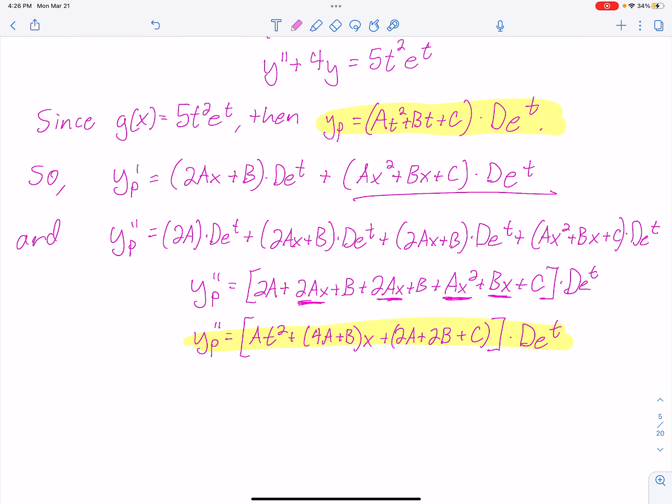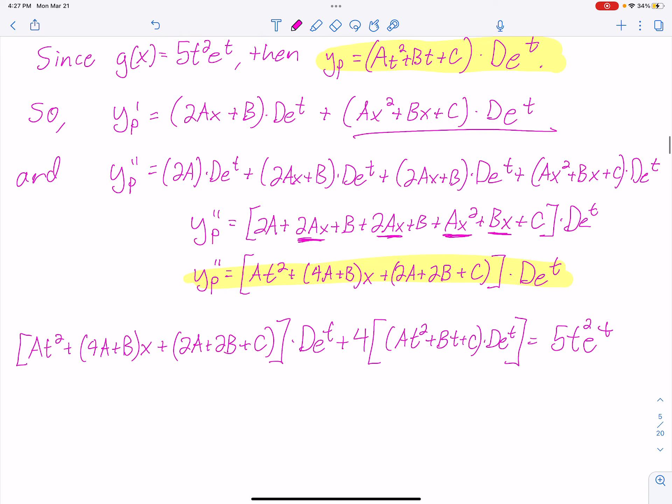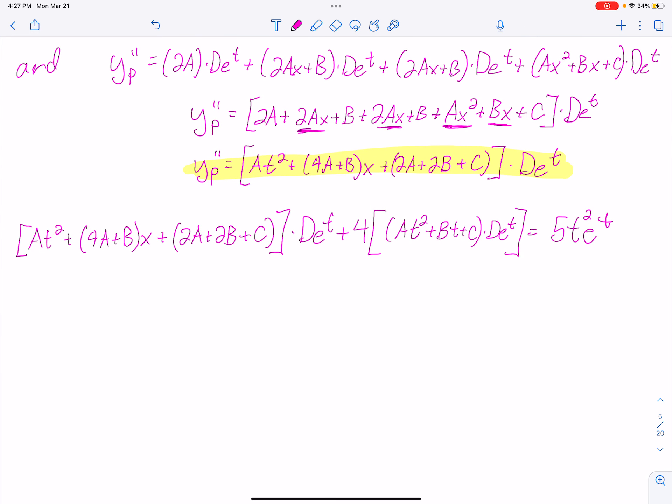So I'm going to plug it into my beginning DE. So I got At² + (4A + B)t + (2A + 2B + C) times De^t plus 4 times At² + Bt + C times De^t. And all of that better equal 5t²e^t. Notice everything is e^t. So we're good on that.